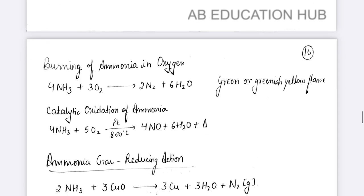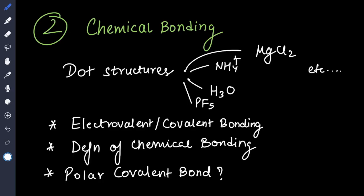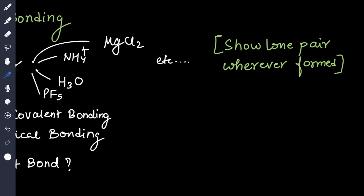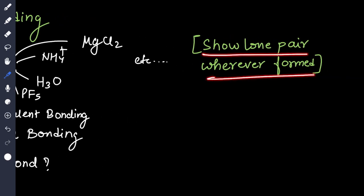Moving on to chemical bonding, you have to do all the electron dot structures: NH4+, MgCl2, H3O+ which is a frequently asked question. You have to mention the lone pair as well, show lone pair wherever formed.